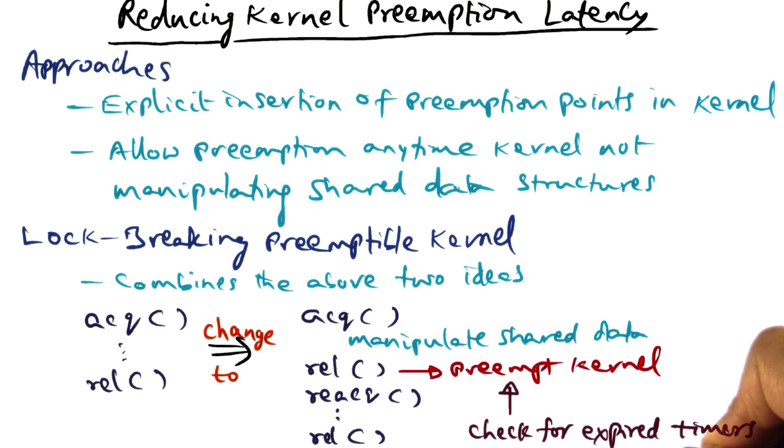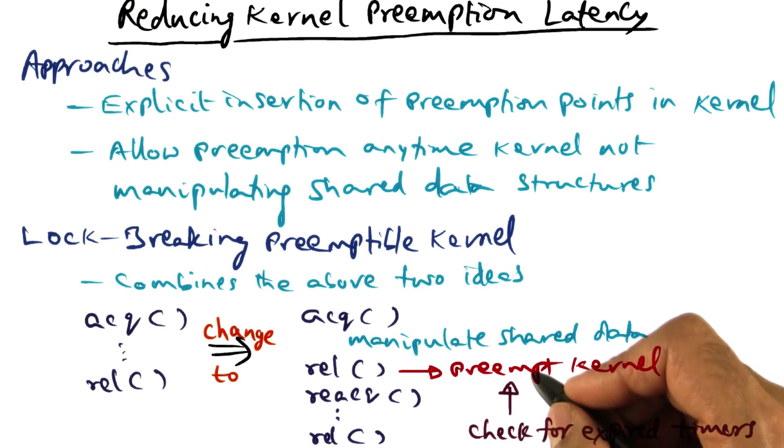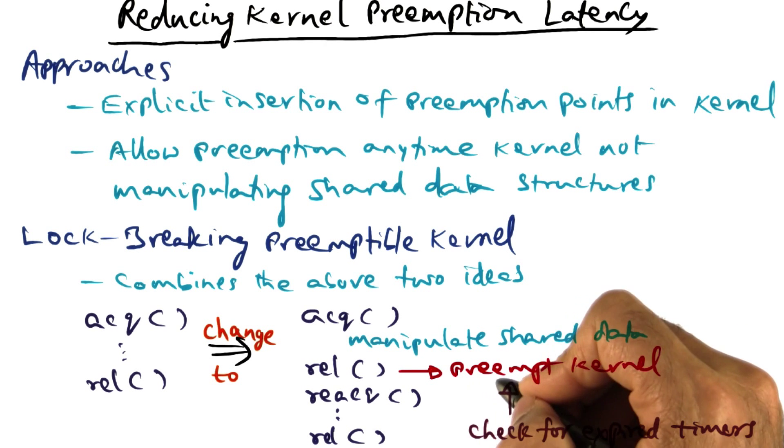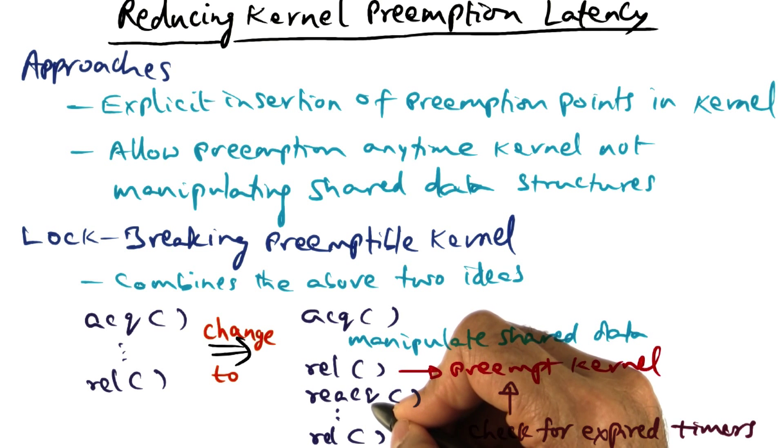If there are expired timers, dispatch them, reprogram one-shot timers if need be. All of that stuff can be done at this point, and then you can come back, reacquire the lock, and continue with the critical section.